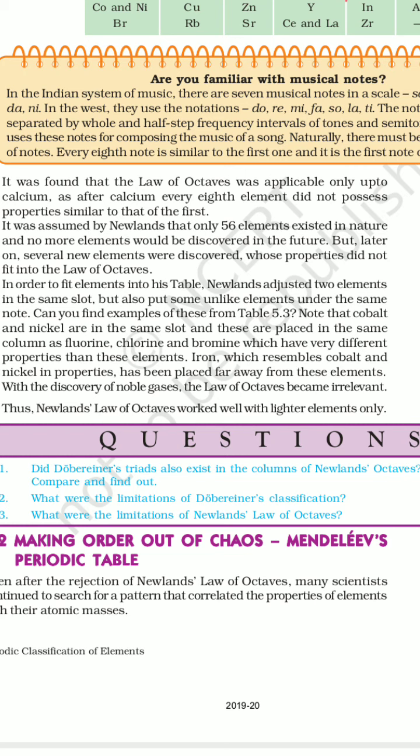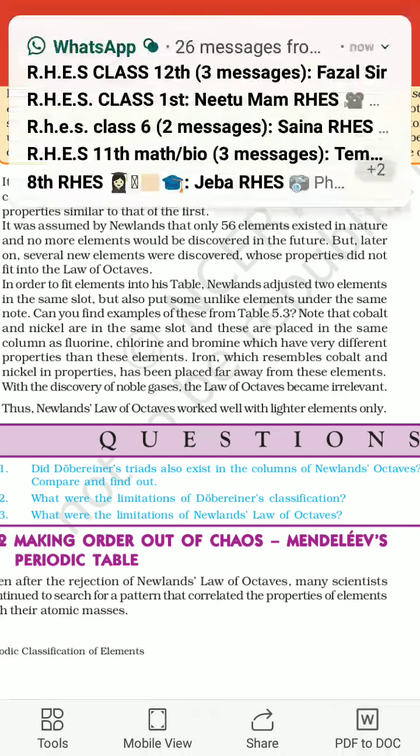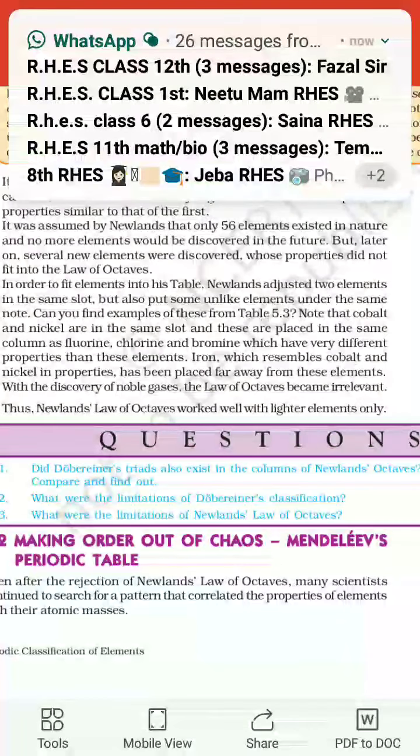The next scientist who continued to search for a pattern correlating the properties of elements with their atomic masses was Mendeleev. हम Mendeleev के बारे में अगले class में पढ़ेंगे। तब तक के लिए आप इस chapter को अच्छे से read कर लें। Till then, thank you.